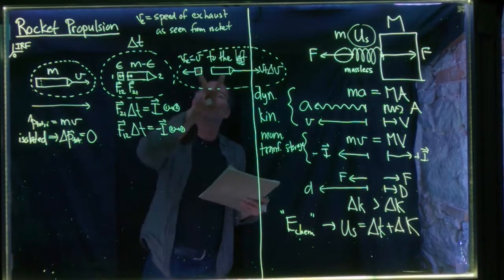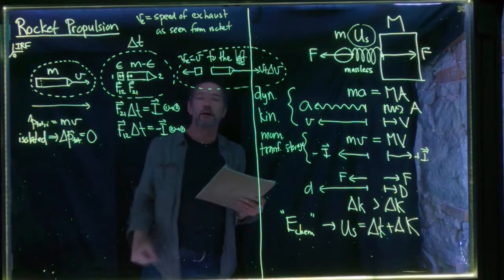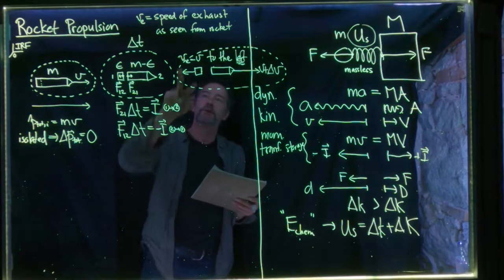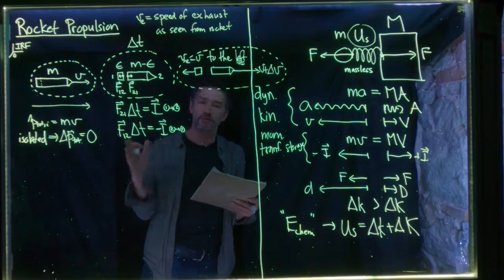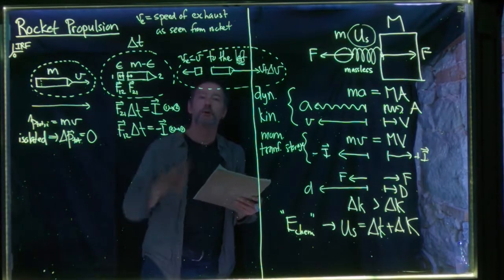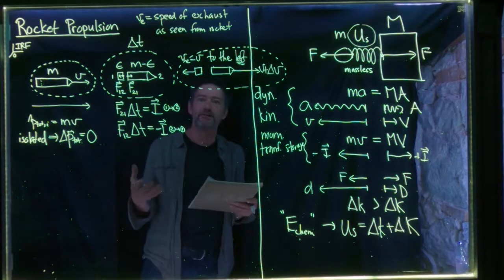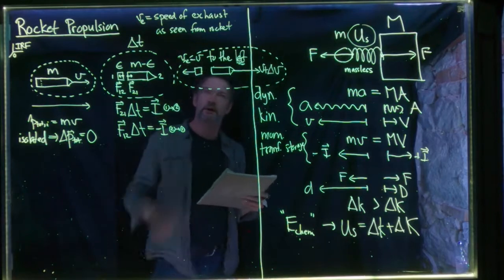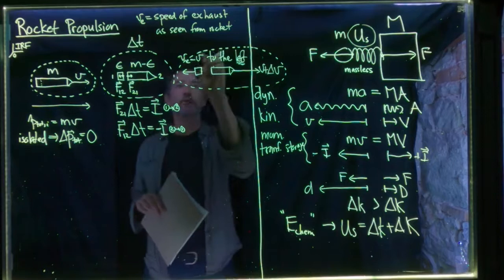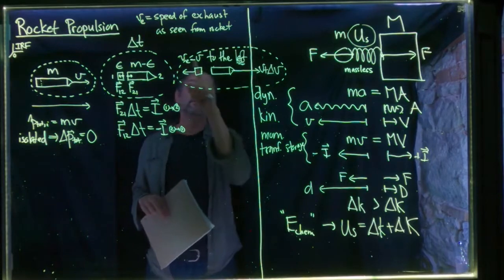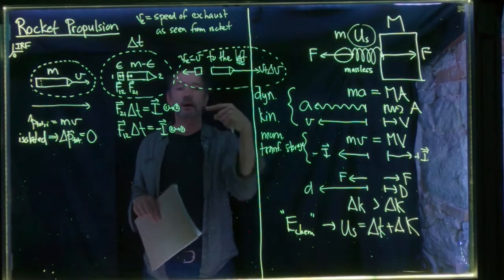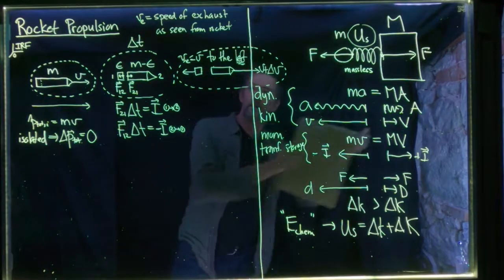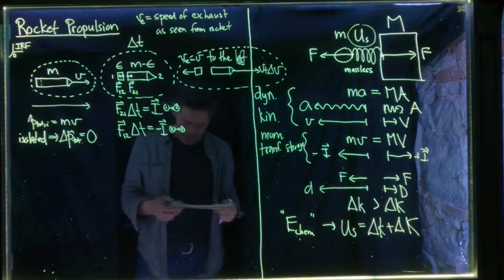This is a really important point: a rocket can go faster than the exhaust gas particles being thrown out. Typically, exhaust gas particles for a chemical rocket move at about four kilometers per second, whereas you can get a rocket going at least 11 kilometers per second — the escape velocity from Earth's surface. So rockets can move faster than their exhaust gas particles, and there will come a time when those exhaust gas particles are actually moving to the right, not to the left, relative to the original inertial reference frame.